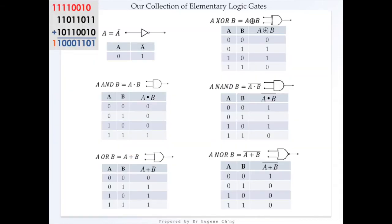Looking at our collection of elementary logic gates, I want to show how we can locate the patterns and map them to one of the gates. If it's 1 and 0, we get a 1 — whether the 1 is on either input. But 1 and 1 gives us 0. This cannot be the AND gate because 1 and 1 gives a 1 there, and neither does it match the OR gate. This summation behavior is equivalent to the XOR gate truth table. If it's 0 and 0 we get 0; if it's 1 and 1 we also get 0 because we carry over 1.